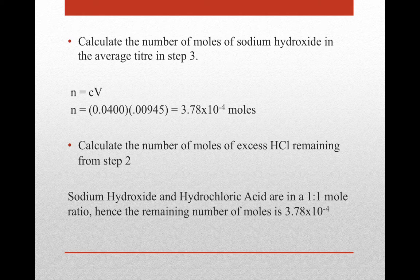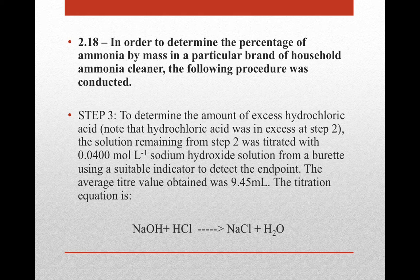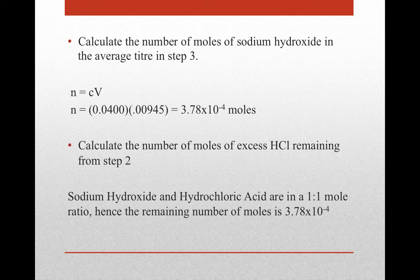From this, we calculate the moles of excess HCl remaining from step 2 — essentially how much HCl reacted with that NaOH in the final stage. Looking at the equation for step 3, NaOH and HCl both have a stoichiometric coefficient of 1, so they're in a 1:1 mole ratio. Therefore, the moles of sodium hydroxide equals the moles of hydrochloric acid remaining from step 2: 3.78 × 10⁻⁴ moles.